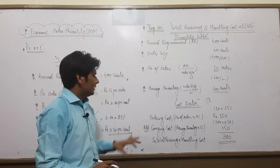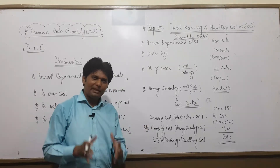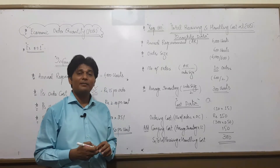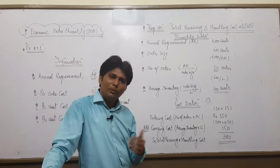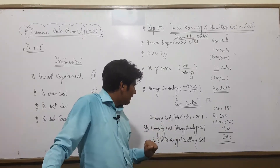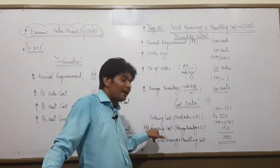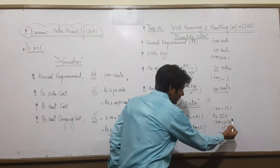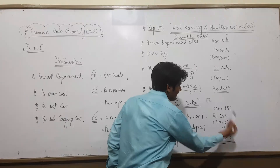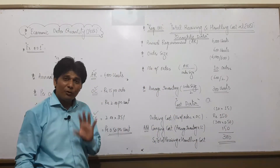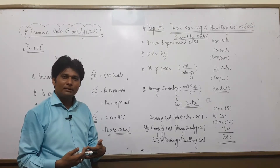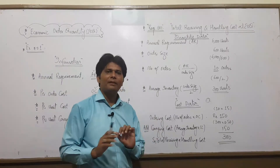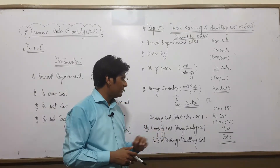The answer is ₹300 for receiving and handling cost at EOQ. No matter what other order size you choose instead of 600 units, the total cost there will be higher than ₹300. This confirms that EOQ gives the minimum total receiving and handling cost.